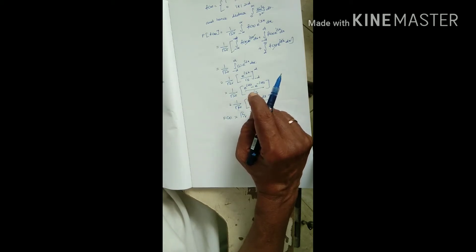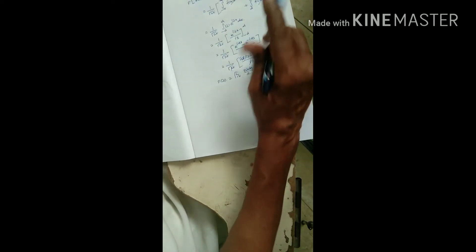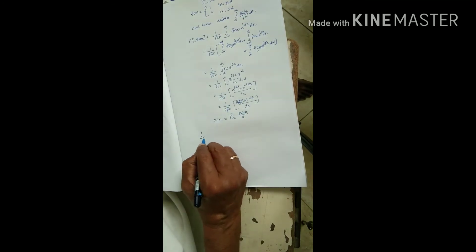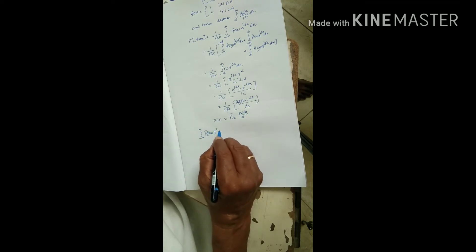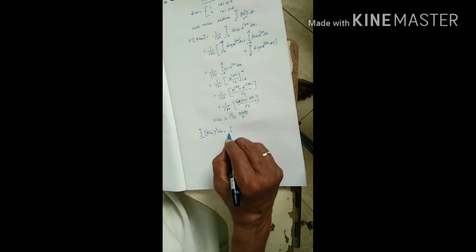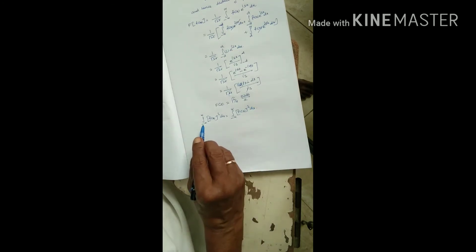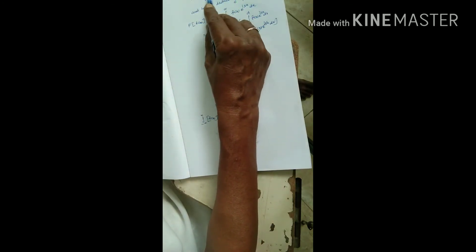Parseval's theorem formula: integral minus infinity to plus infinity f of x whole square dx equals integral minus infinity to plus infinity F of s whole square ds.